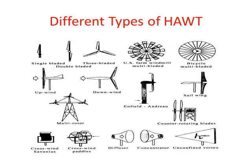Different types of turbines are shown here. These include single bladed, double bladed, three-bladed, US farm type, bicycle multi-bladed, upwind turbine, downwind turbine, multi-rotor mounted on single tower, diffuser type, and concentrator type. So there are lots of horizontal axis wind turbine configurations.